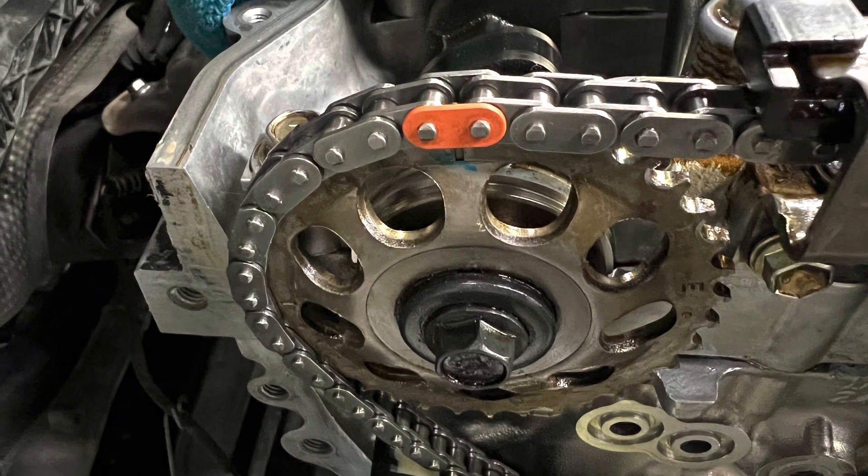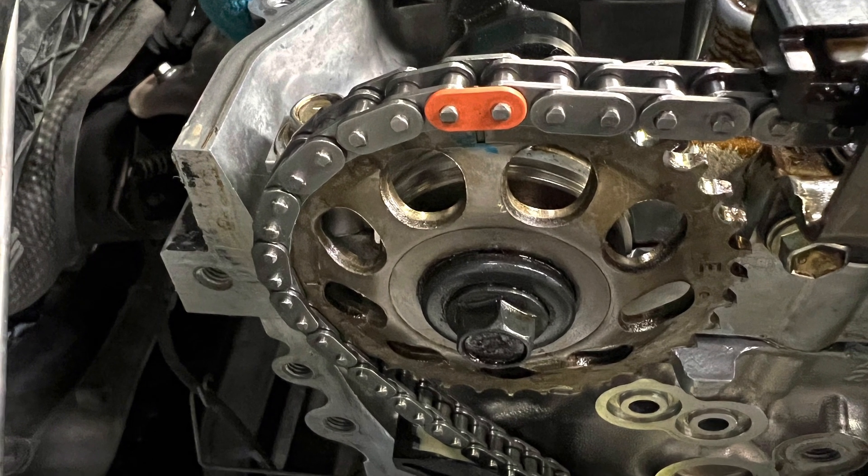On the exhaust camshaft, there's a little dot also on the sprocket. So you have one orange, two orange, one yellow - the single orange chain link goes over the dot on the exhaust camshaft.